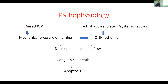There is increased ganglion cell death or apoptosis — it's a programmed cell death. Or because of systemic factors, there is optic nerve head ischemia, maybe when a patient is sleeping. Decreased axoplasmic flow leads to apoptosis.